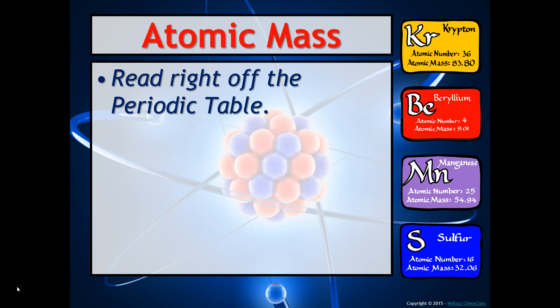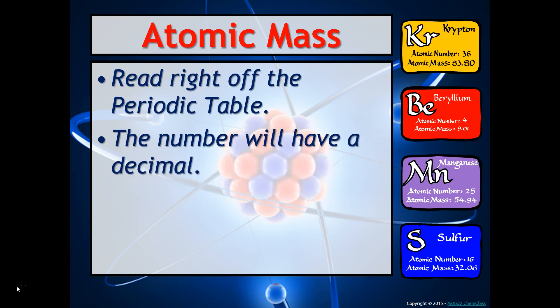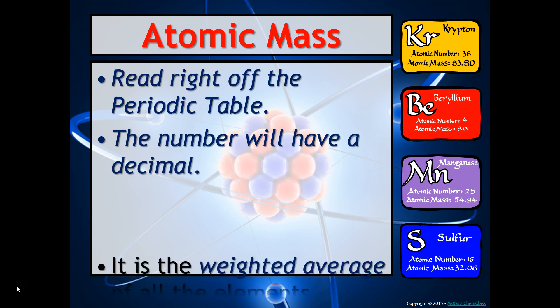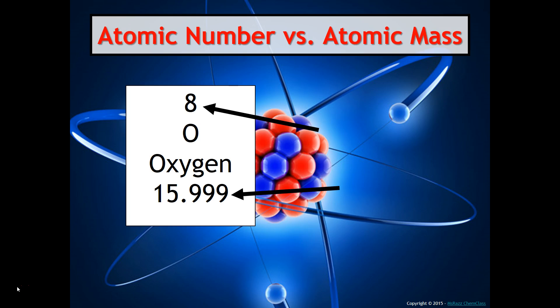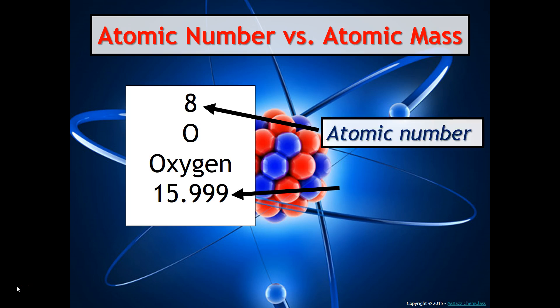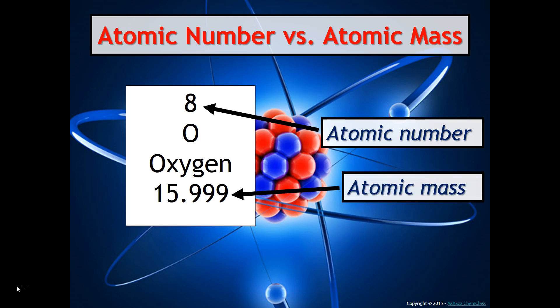Atomic mass is read right off of the periodic table. This number will have a decimal. It is the weighted average of all the element's isotopes. On most periodic tables, the atomic number is at the top, and typically the atomic mass is on the bottom.